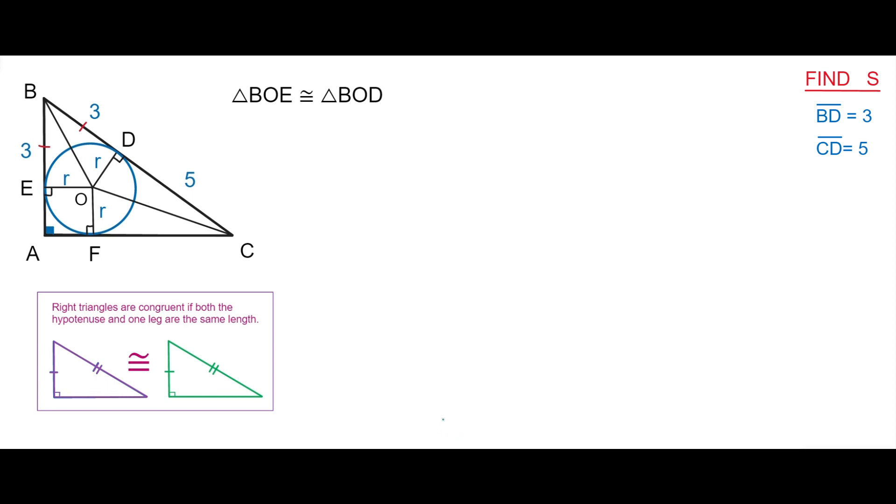Triangle COF and triangle COD are congruent for the same reason. Therefore segments FC and DC are congruent.